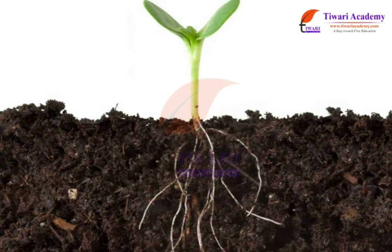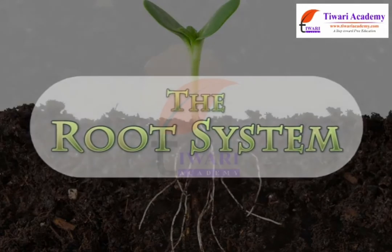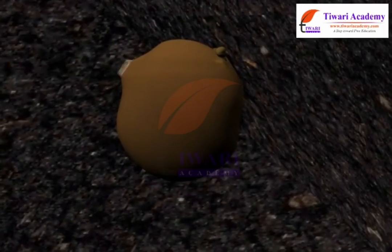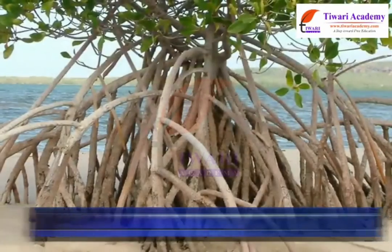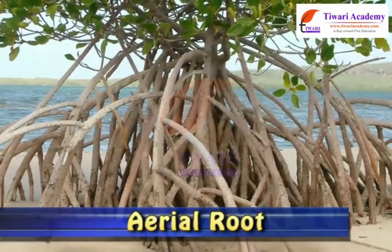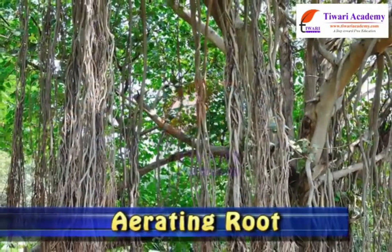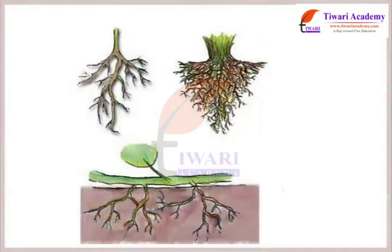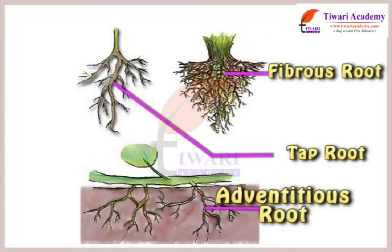In this module, we will learn about the root system. The part of the plant which lies under the soil is called root. However, roots can also be aerial or aerating. There are three types of roots: tap root, fibrous root, and adventitious root.